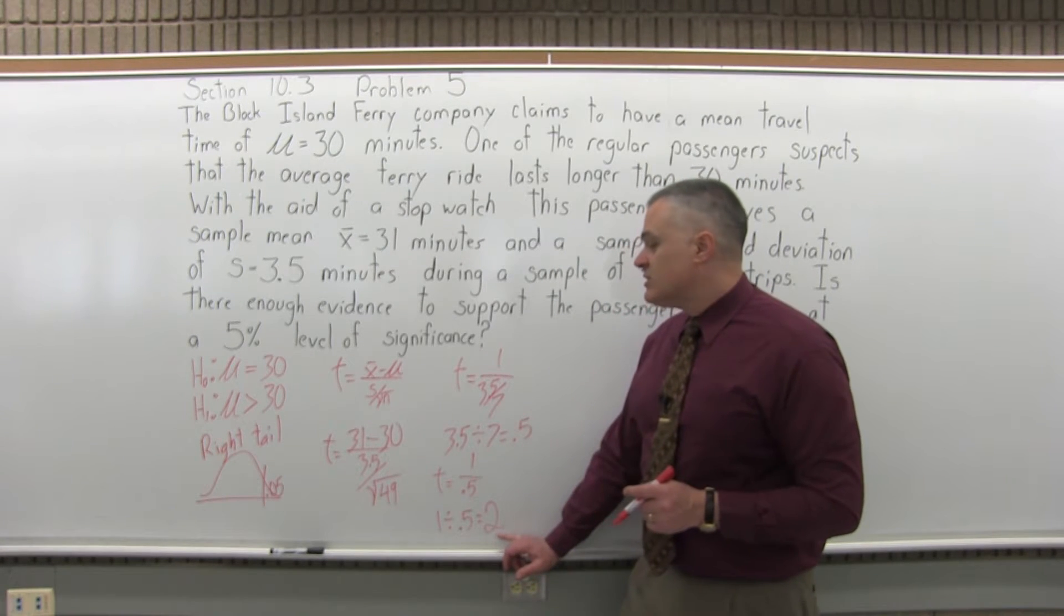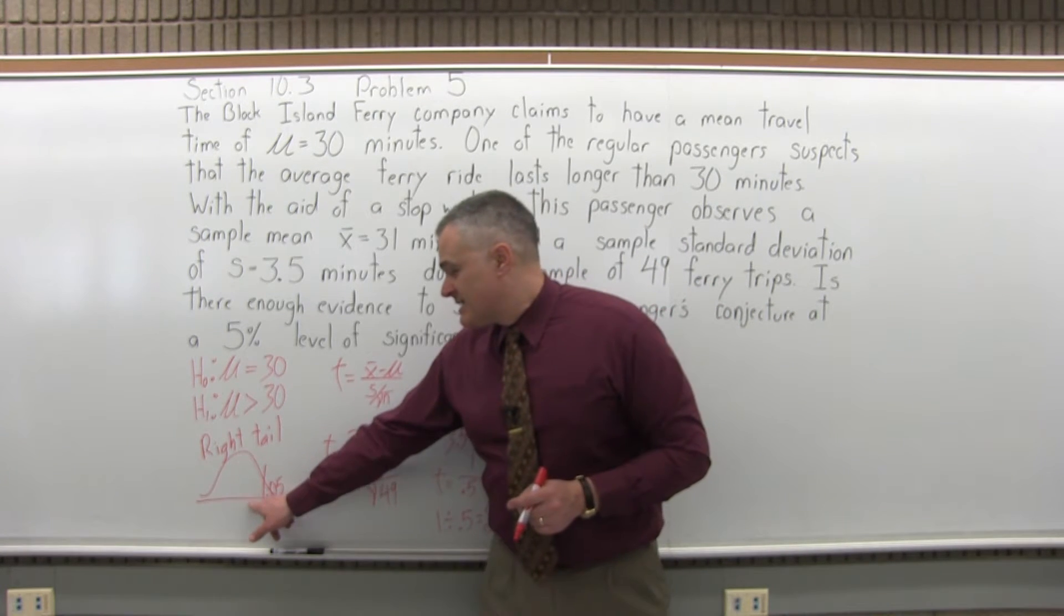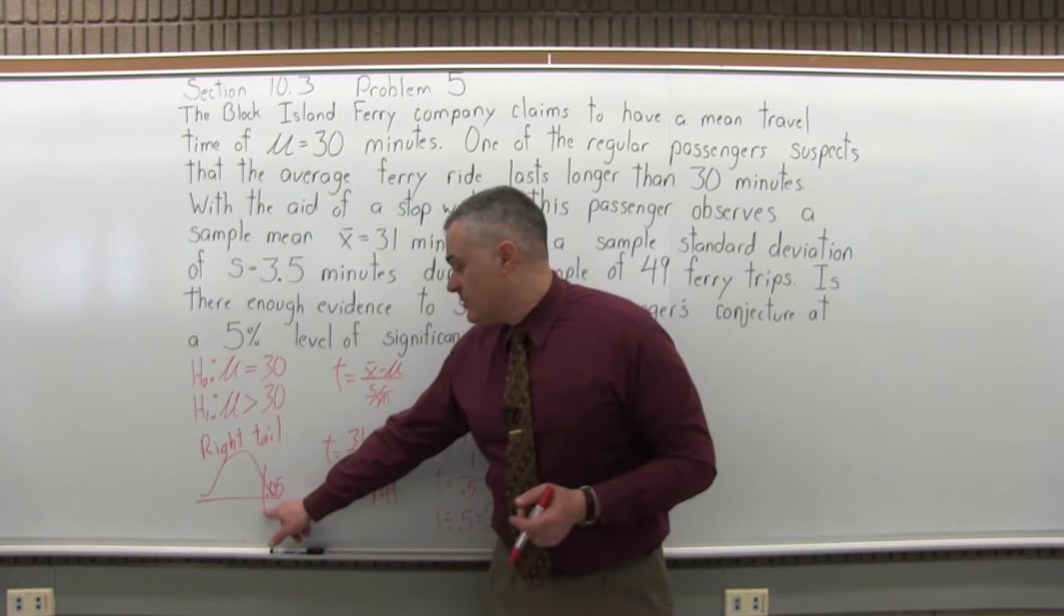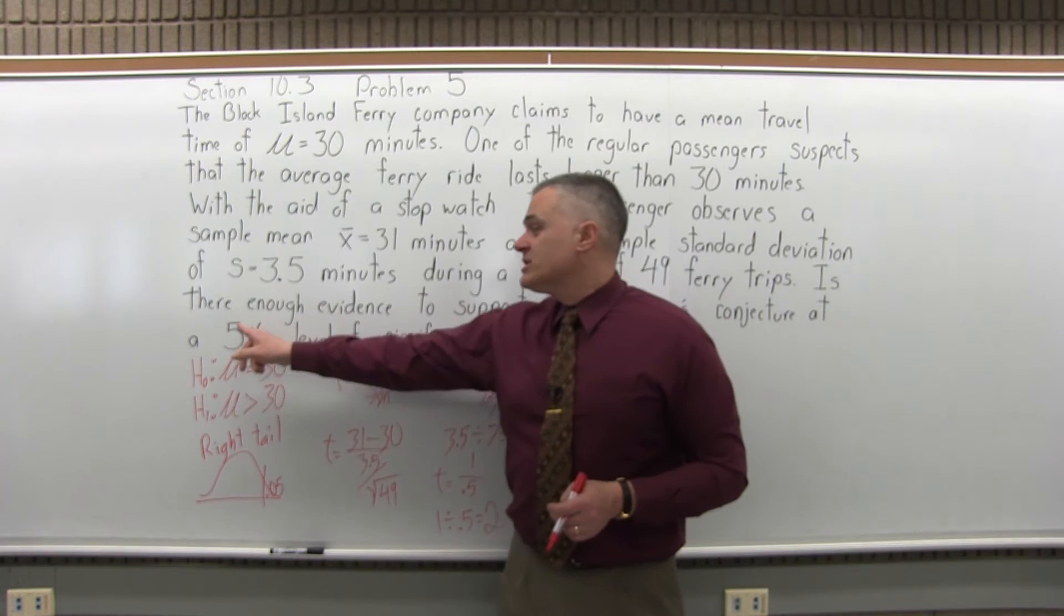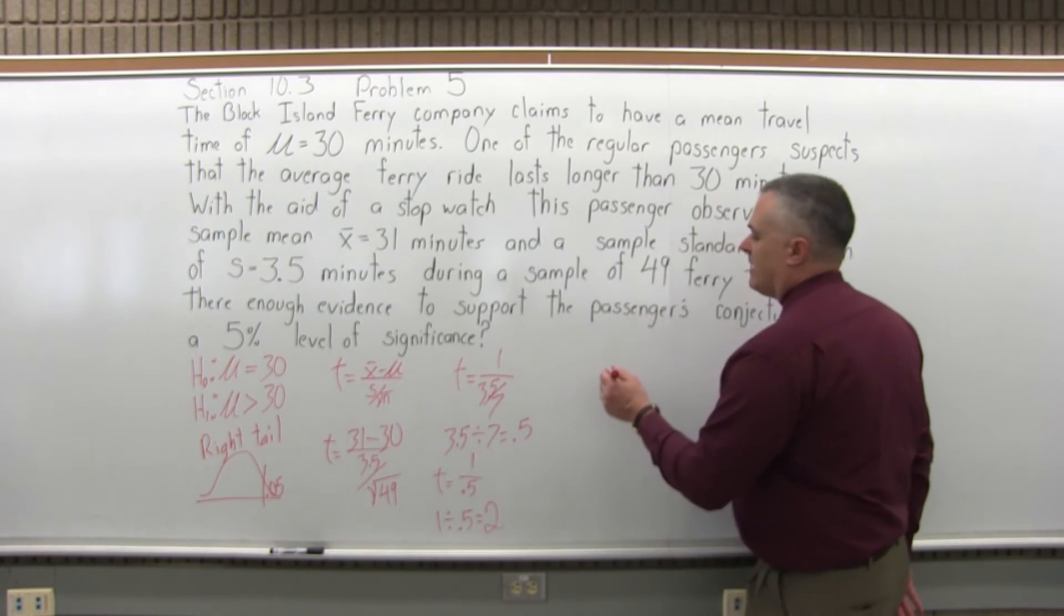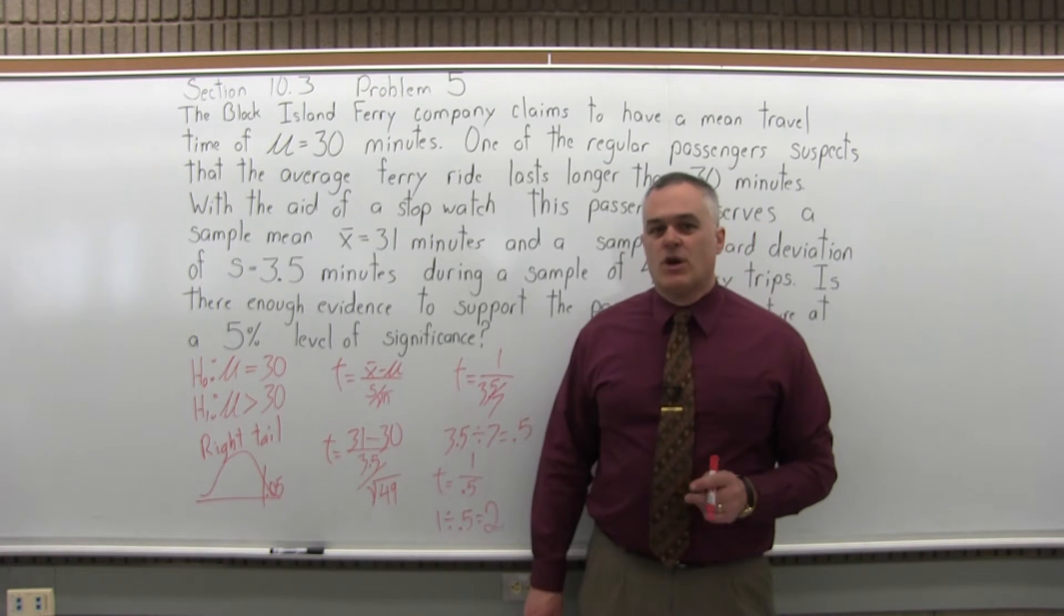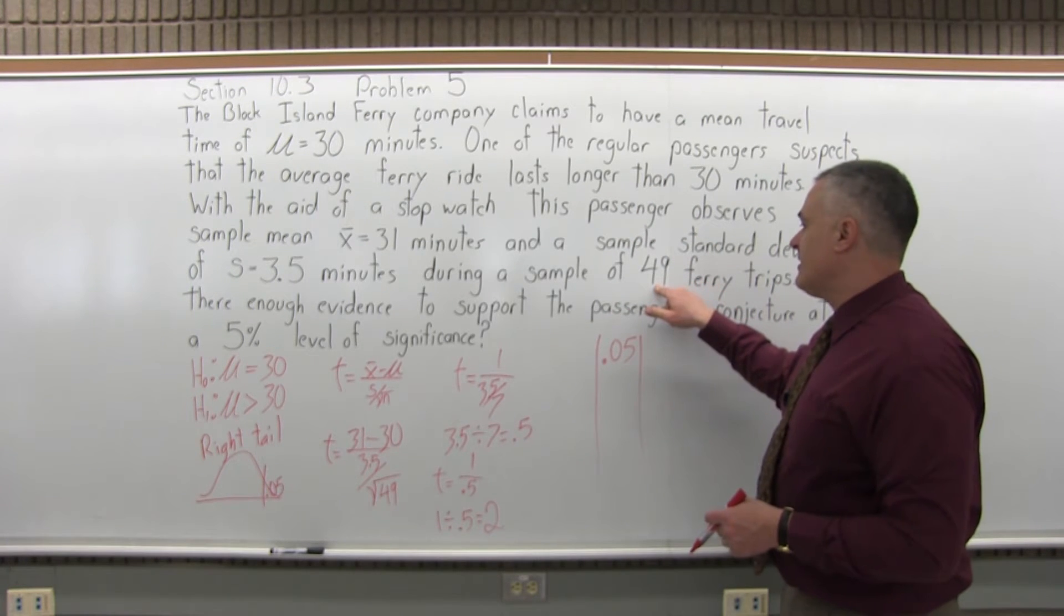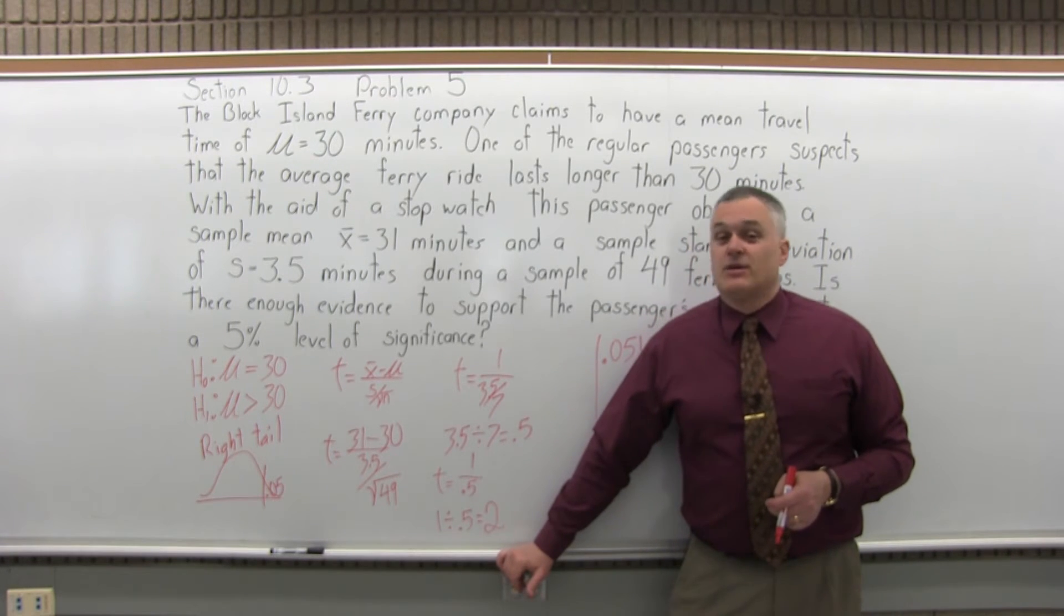So my value for t is 2. Now the question is, does the 2 push us out into the critical region, or does it stay a little before the critical region? So what we have to do is see what the critical value of t would be that makes the boundary between the non-critical and critical part of the graph. The question said use a 5% level of significance, so you're going to go to that student t distribution at the end of the homework assignment. Find the 0.05 column on that chart. You want to find the right row. The row you look for is one less than the size of the sample. The size of our sample is 49, one less than 49 would be 48. So you want to look for the 48 row, and what you'll find is that there is no 48 row.